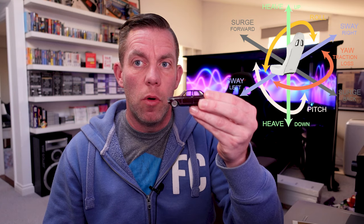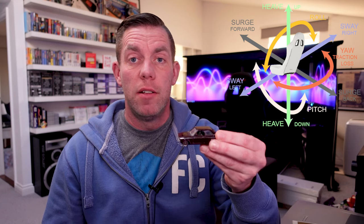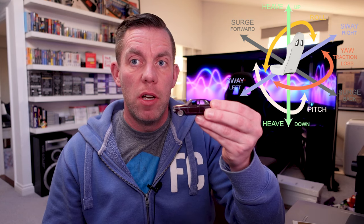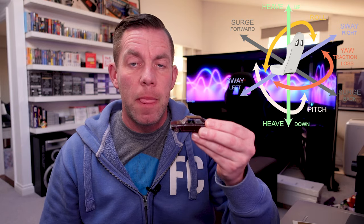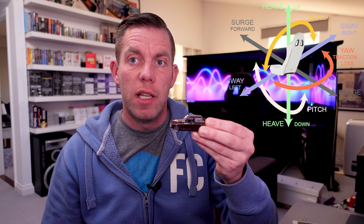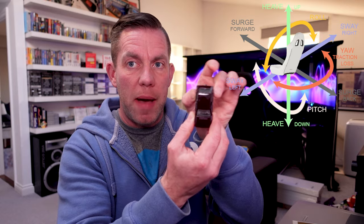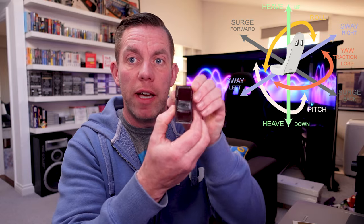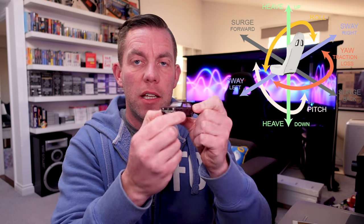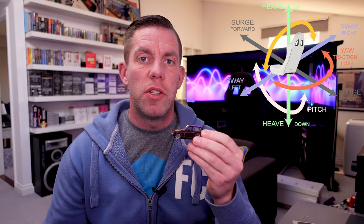Heave is when the vehicle goes up or down - you're either heaving up because you've gone over a steep hill, or dropping down because the ground has dropped away from you. Finally, sway or strafe is when the whole vehicle moves left to right in parallel - unlike traction loss where just the back end swings out, sway moves the entire vehicle laterally.